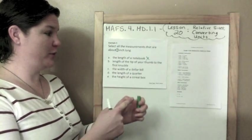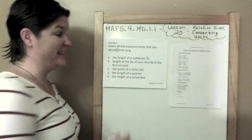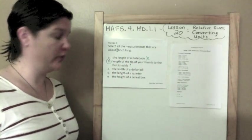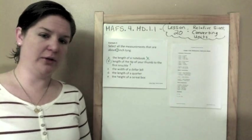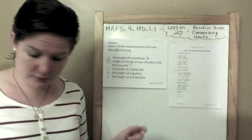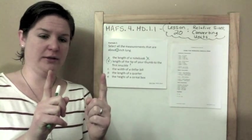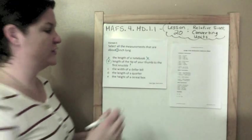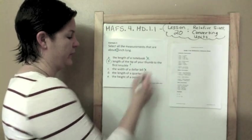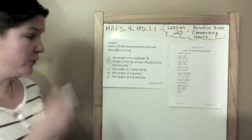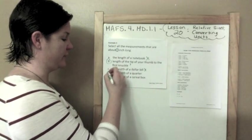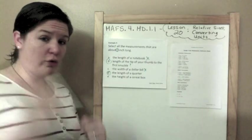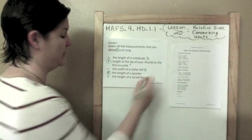B. The length of the tip of your thumb to the first knuckle. See? Yes. The width of a dollar bill. Okay, well if you're thinking about a dollar bill, you're either going about this big or about that big. So that's too long. The length of a quarter. Yeah, if you were going across a quarter, that would be about the size of an inch. The height of a cereal box. Uh, no. That would be too big. So B and D.